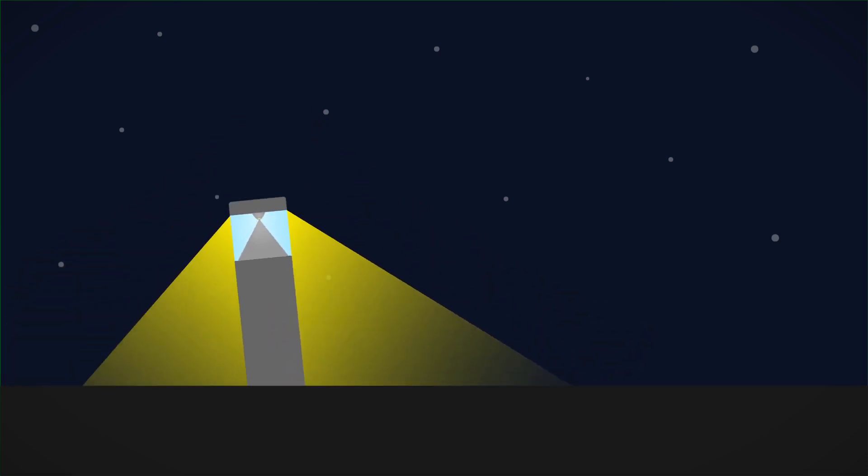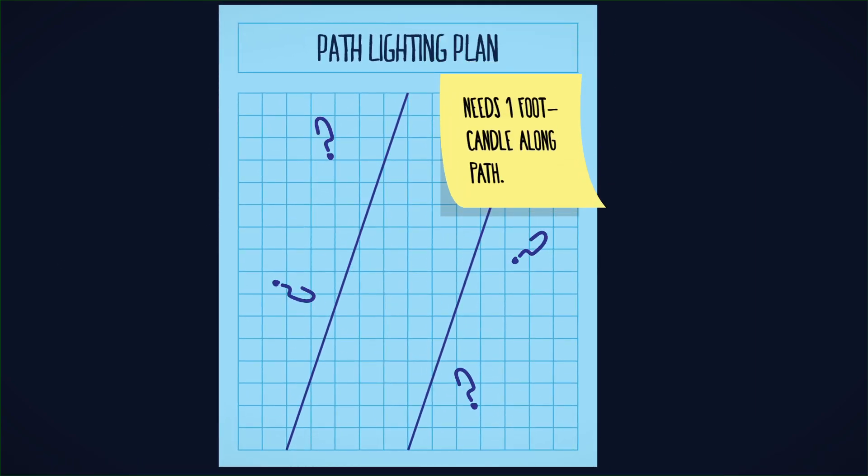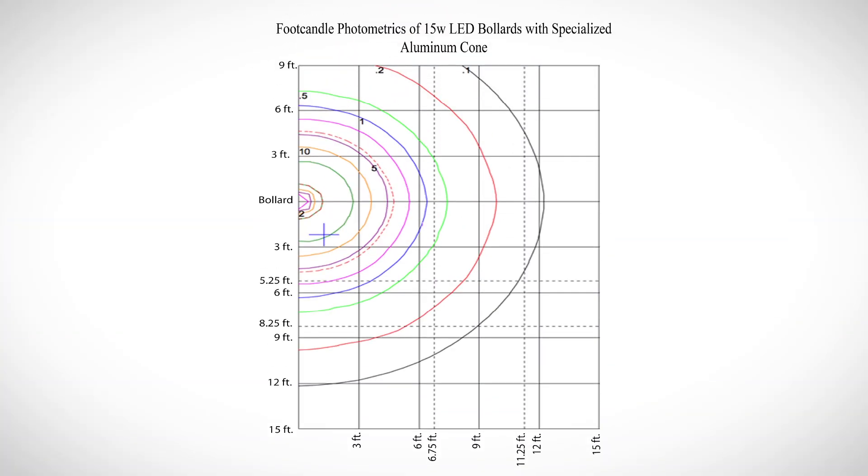Let's say you require one foot candle along your pathway. According to this diagram, the 15 watt LED bollard light equipped with a specialized LED reflector casts one foot candle in a six foot radius.